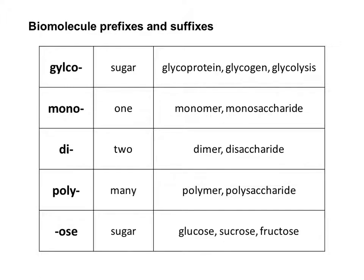This last slide is a list of prefixes and suffixes we'll be using throughout this unit. Glyco you've seen before from glycoproteins — a carbohydrate chain or sugar attached to a protein in the cell membrane — so glyco just means sugar. Mono means one, as in monomer; we'll also see monosaccharides in the carbohydrate unit. Di means two — two monomers make a dimer, and two sugars make a disaccharide. Poly means many, like polymer or polysaccharide. And sugars often end in the suffix -ose, which is handy because we can recognize them as sugars — examples include glucose, sucrose, and fructose.